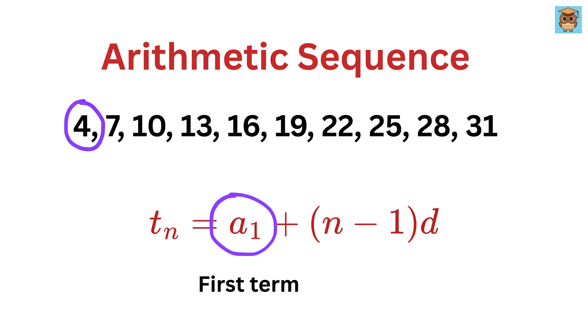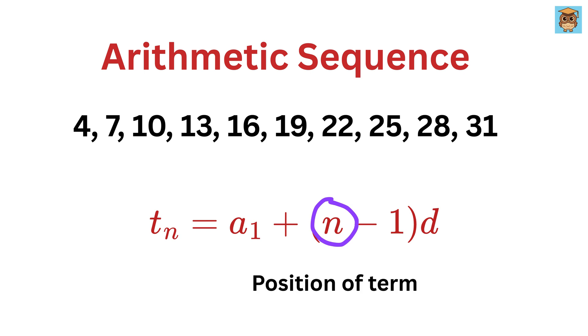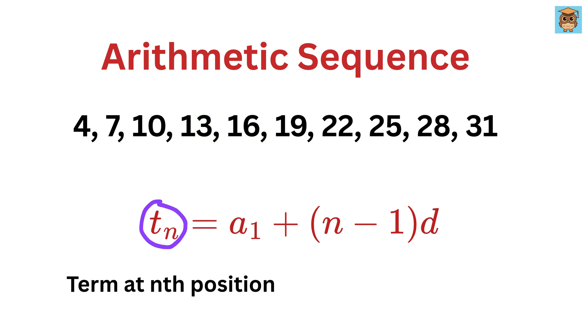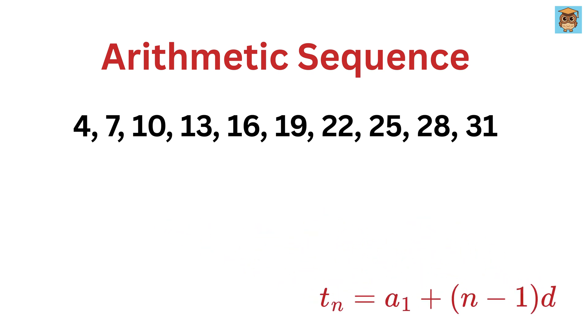Then n is the position of the term you're looking for, and d is the common difference between the terms. Then this tn is the term you want to find at the nth position. This formula helps you find any term quickly without having to write the whole sequence. Let's look at a few examples to see how this works.